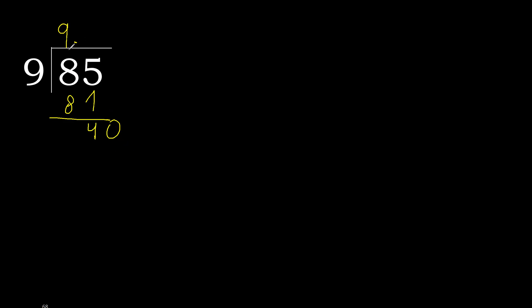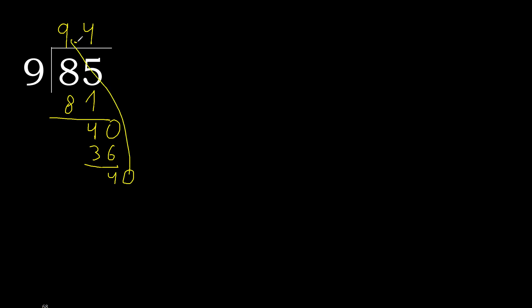9 multiplied by 5 is greater, multiply by 4. 36 is not greater. Subtract — remainder 4. Complete point. Point is here. 40.